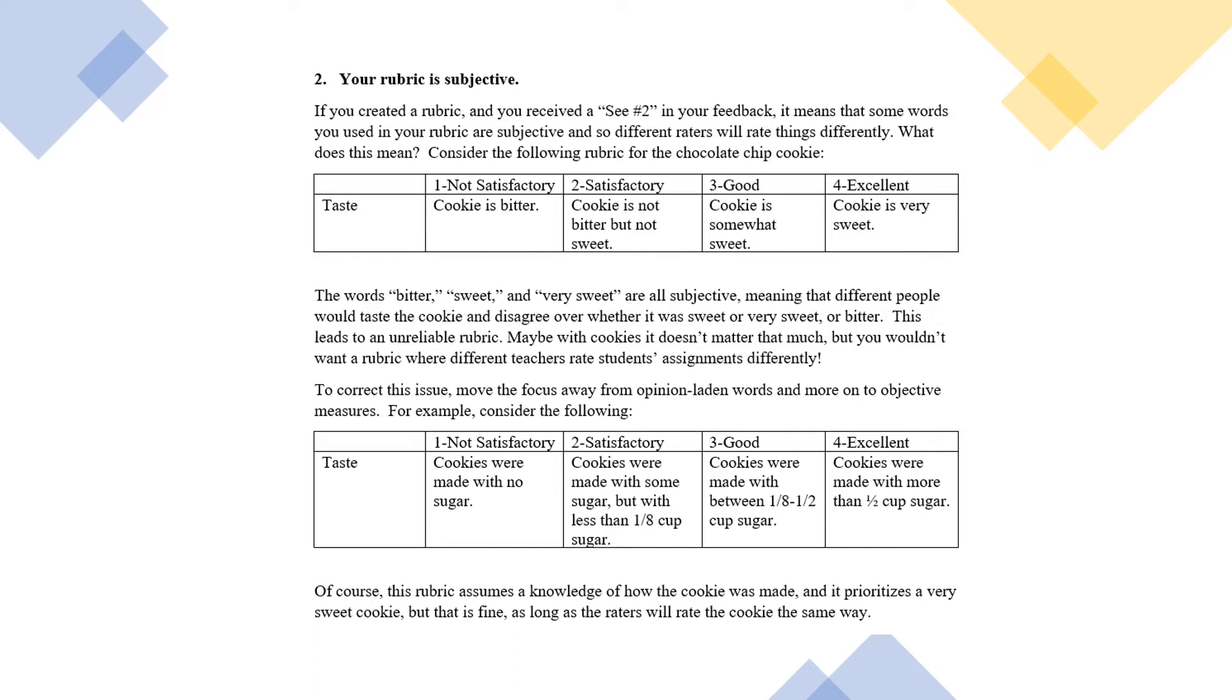Instead, it's better to make it objective. Look at the example on the bottom. One, cookies were made with no sugar. Two, cookies were made with some sugar but with less than one-eighth of a cup of sugar. Three, cookies were made with between one-eighth and one-half cup of sugar.